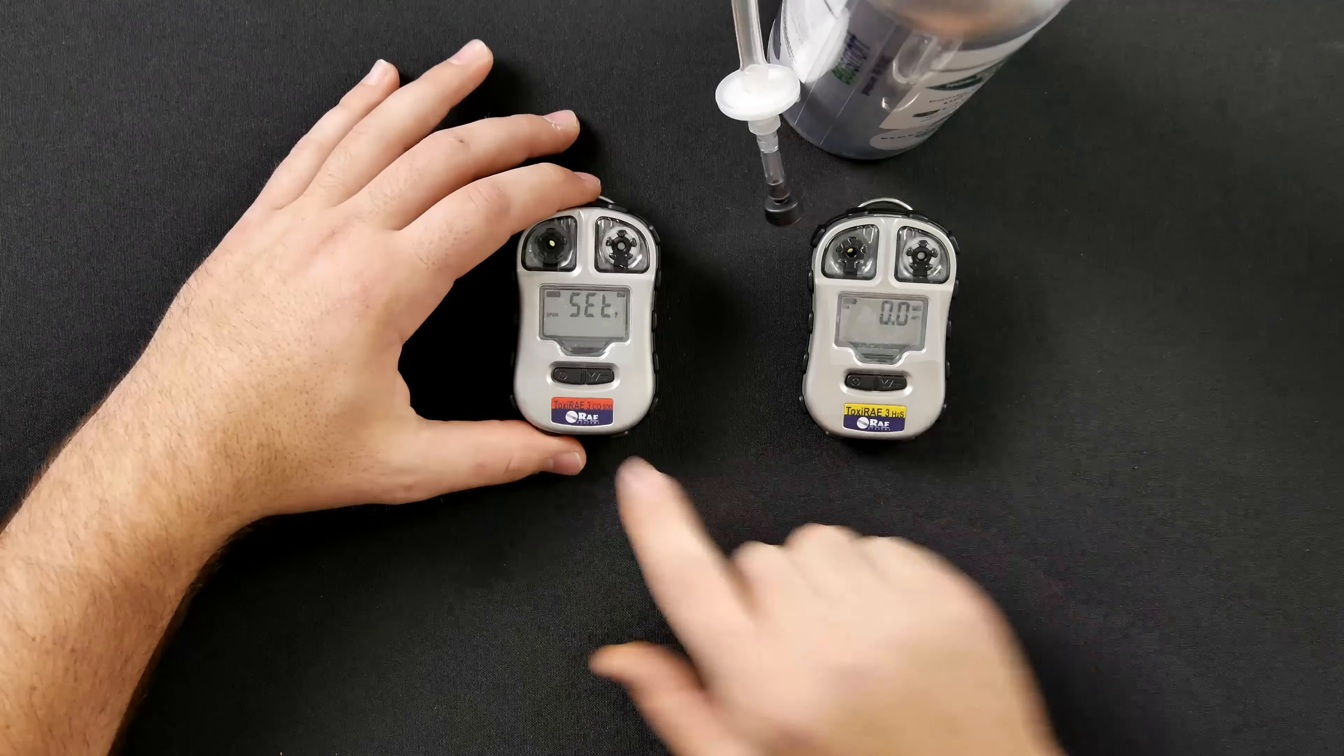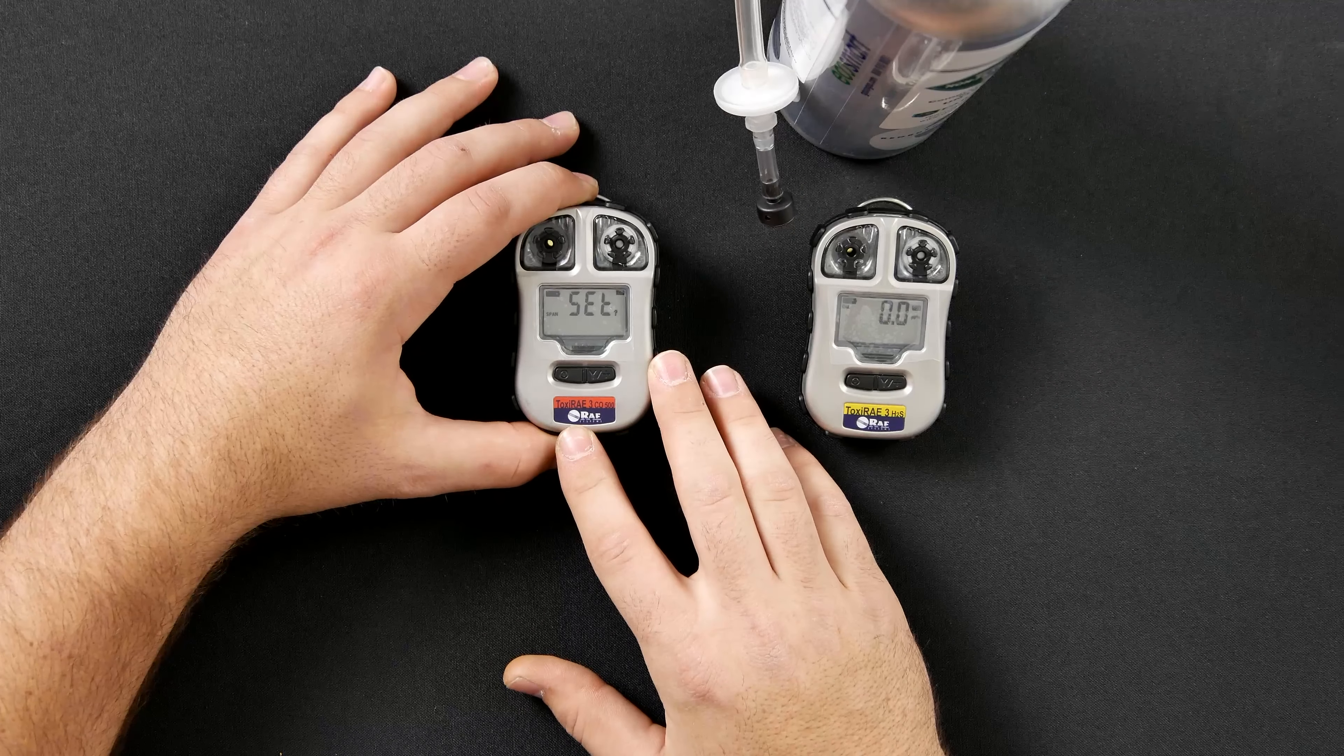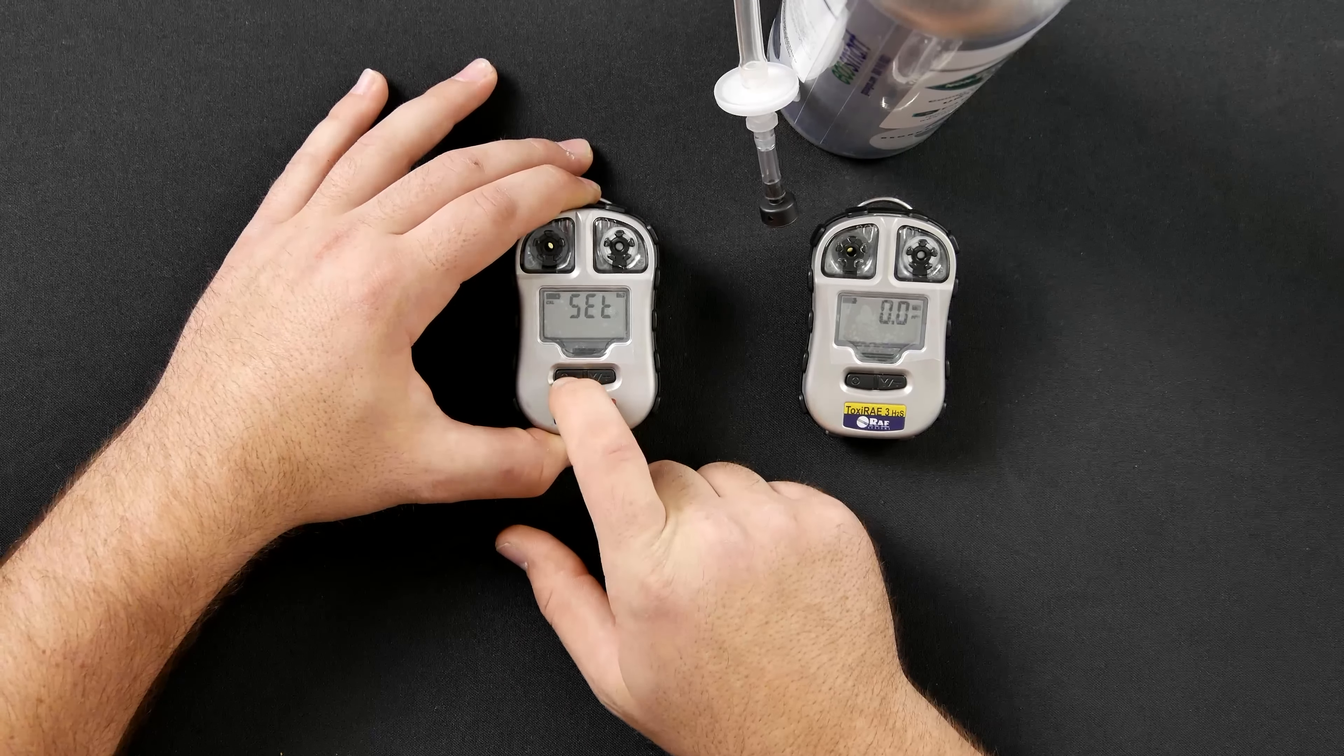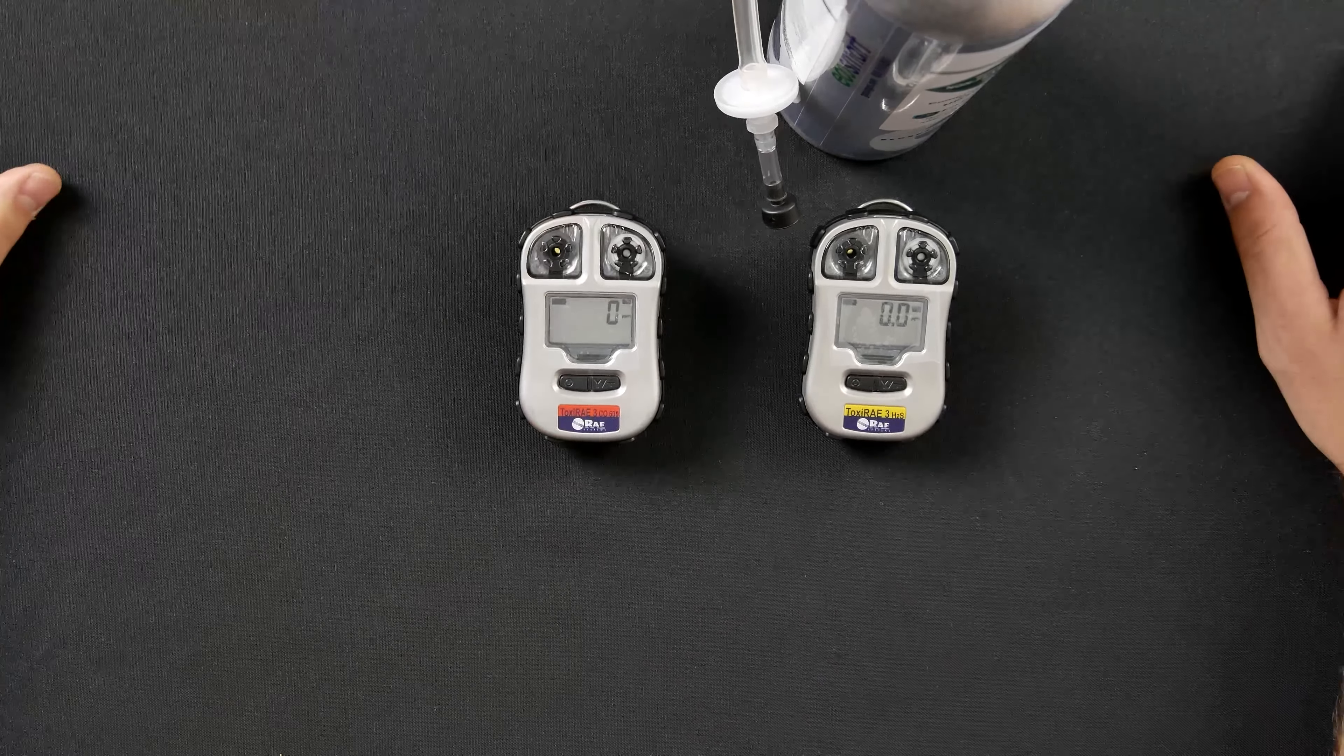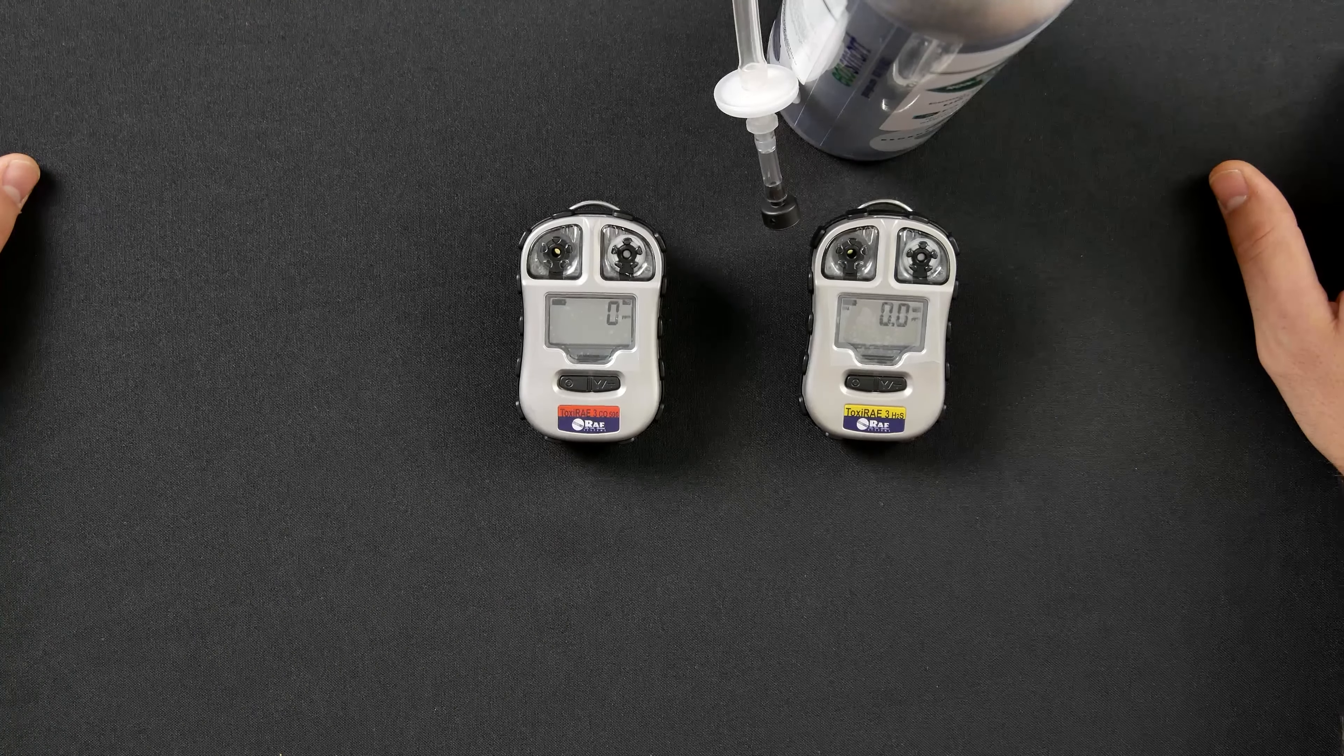If you do leave the units in the diagnostic mode for too long, it will go back to its regular reading mode. But instead, we are going to select the mode button and scroll over to the end button. Then select yes to exit. That is how you calibrate the Toxiray 3 CO.